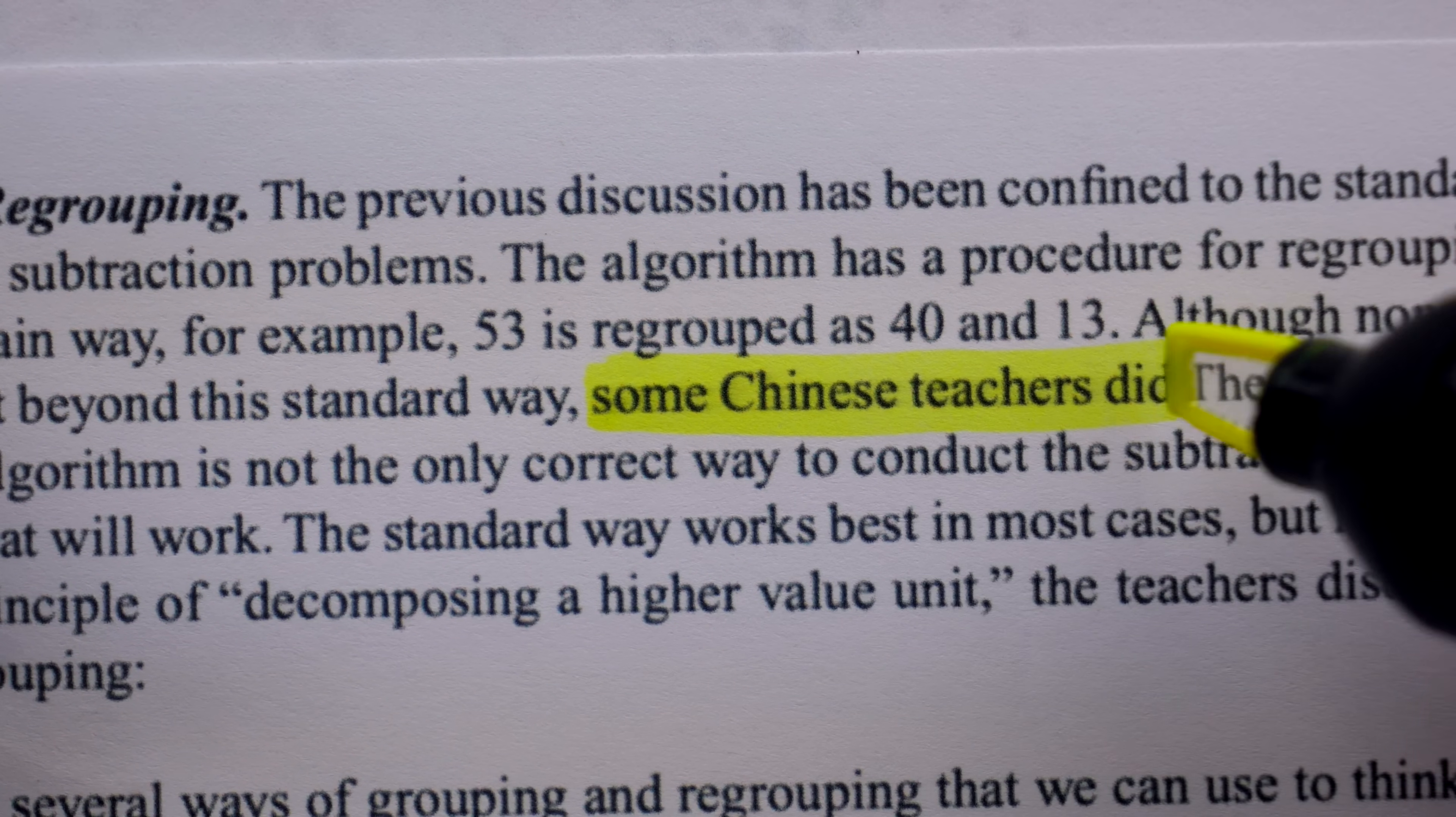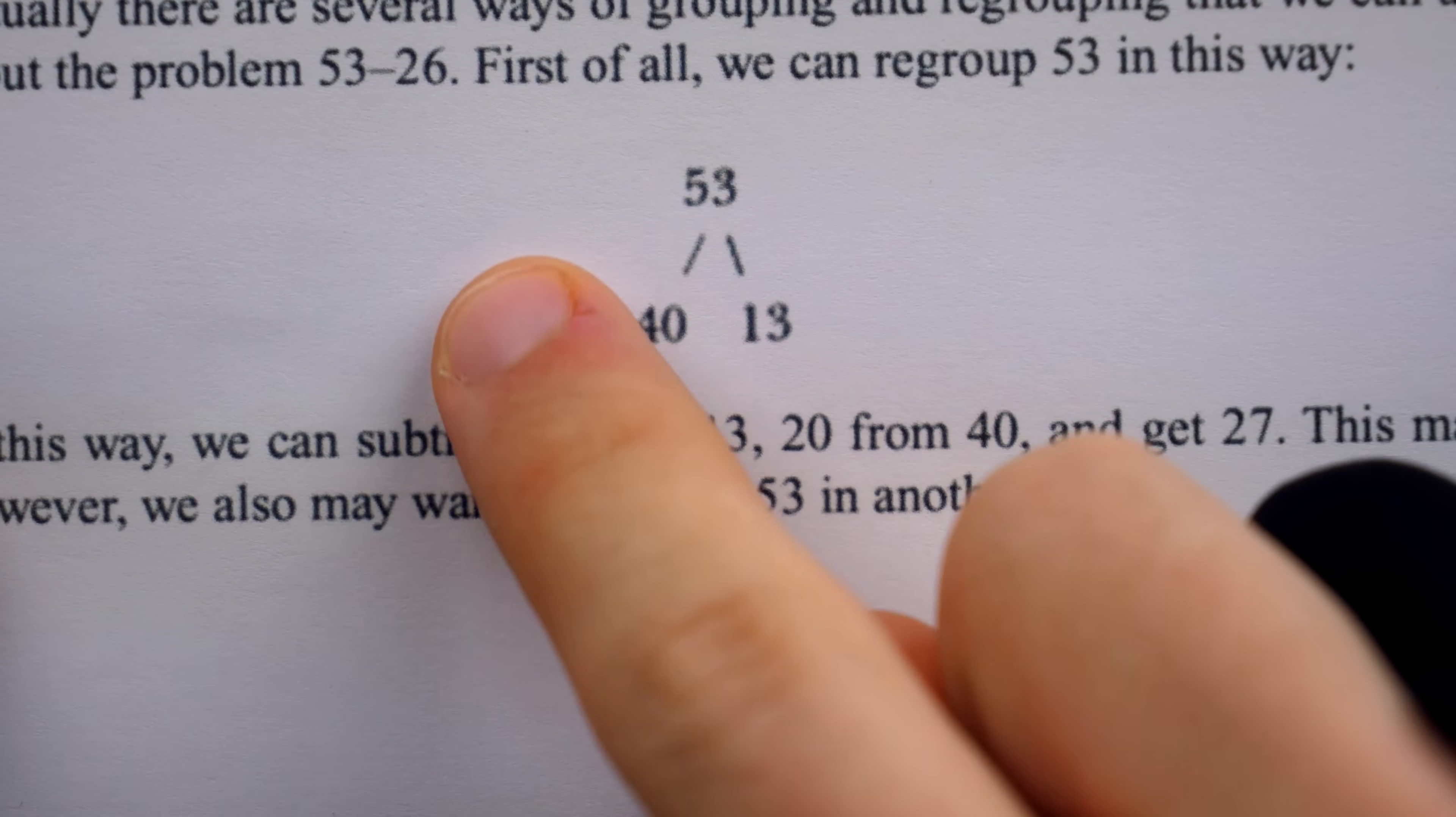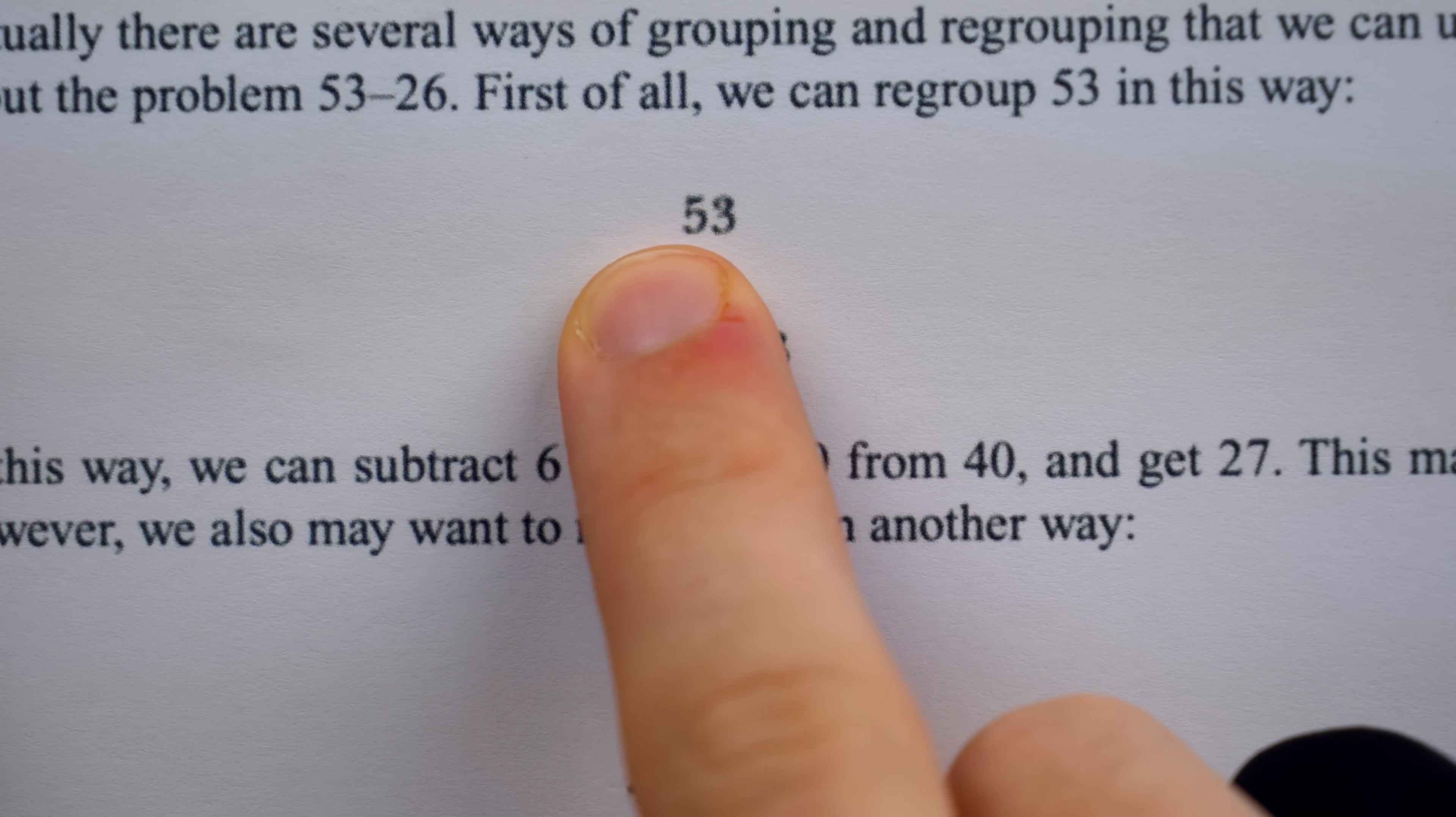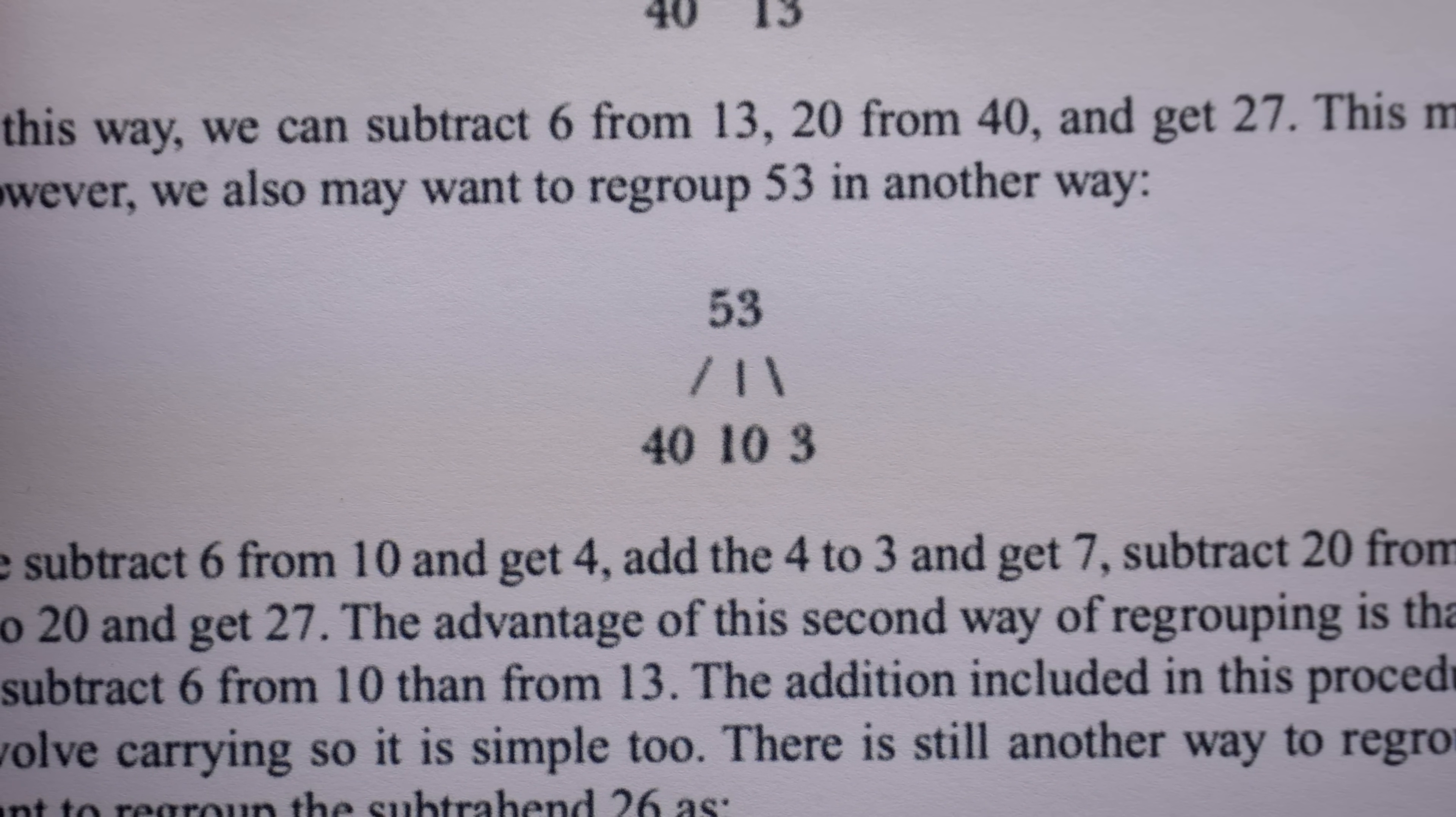When doing subtraction the standard borrowing way, the decomposition that's typically used is to take a 10 and put it with the ones. This is in the discussion of the problem 53 minus 26. You take one of those 10s, and now there's 40 left, and you put the 10 with the three ones, so now that's 13. So none of the U.S. teachers mentioned any regrouping beyond that standard method. However, some of the Chinese teachers did. They showed how with a diagram like this, not only can we decompose a higher place value to add it to the lower place value, but we can decompose in other ways as well.